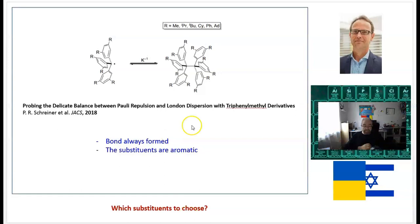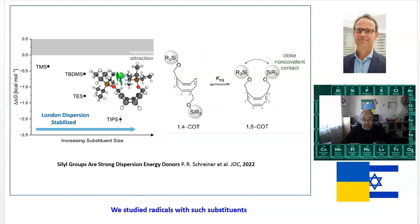Which substituents should we use? A potential answer comes from the same group of Professor Schreiner. In a recent publication he showed that silyl groups are very strong dispersion energy donors. It's a very elegant publication—he studied the energy differences between two isomers and saw that the interaction between silyl groups really keeps this isomer more stable. Bottom line: substituents usually considered neutral that don't make bonds between them, like trimethylsilyl or tertiary butyl dimethylsilyl, can be attracted to each other and make the complex we're looking for.